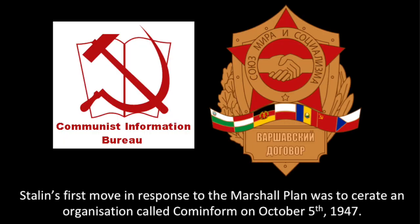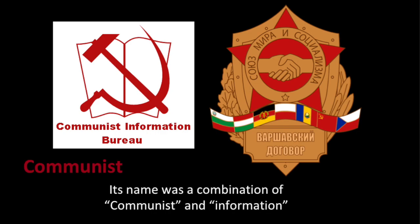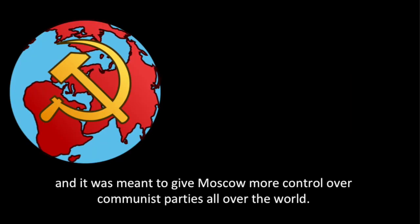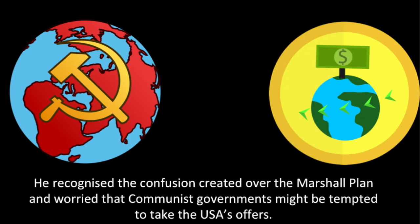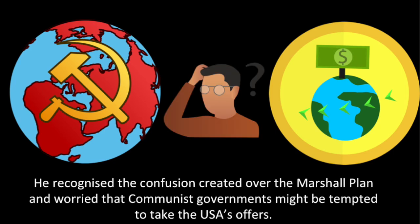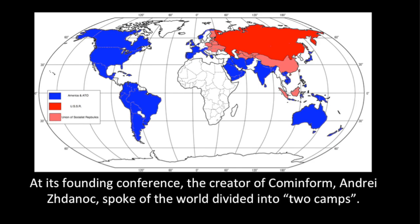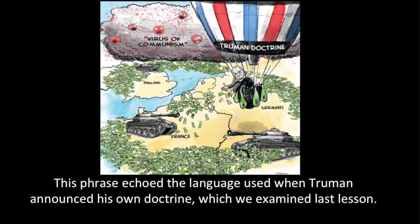Stalin's first move in response to the Marshall Plan was to create an organization called Cominform on October the 5th 1947. Its name was a combination of 'communist' and 'information' and it was meant to give Moscow more control over communist parties all over the world. He recognized the confusion created over the Marshall Plan and worried that communist governments might be tempted to take the USA's offers. At its founding conference, the creator of Cominform, Andrei Zhdanov, spoke of the world divided into two camps — a phrase that echoed the language used when Truman announced his own doctrine.